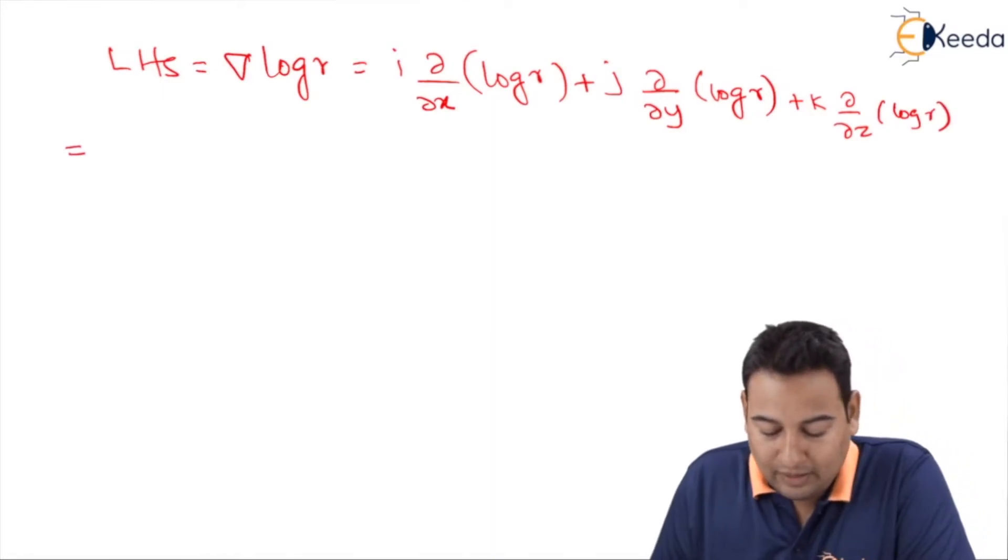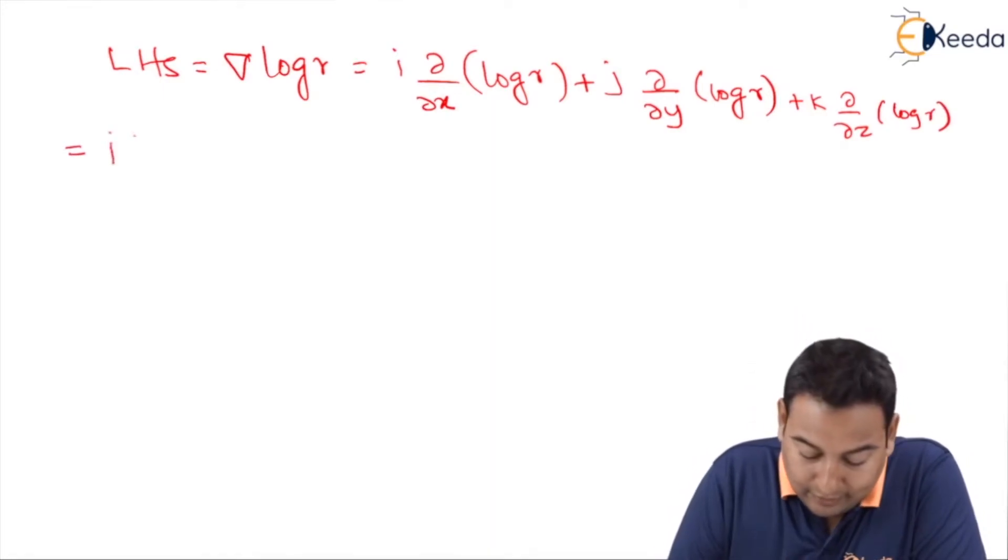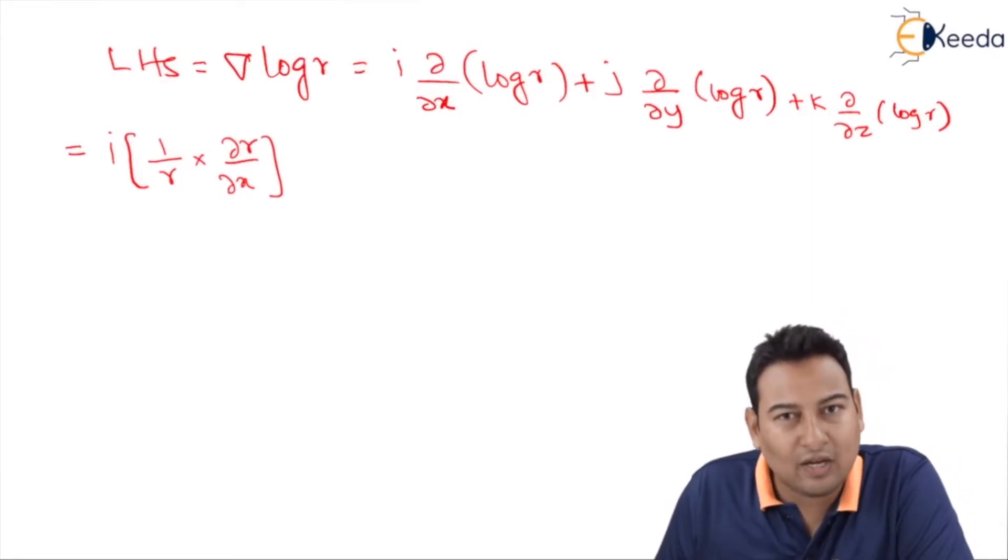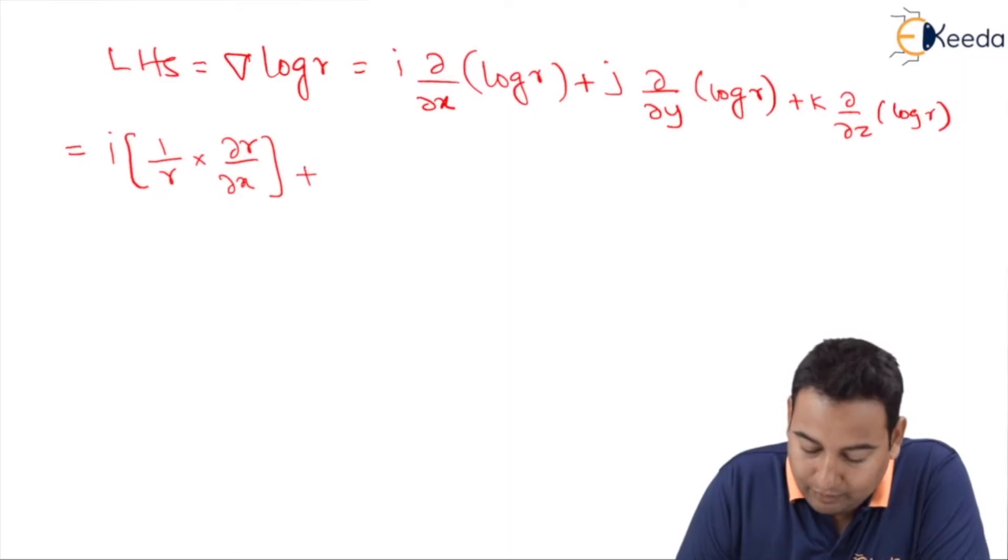Let's differentiate with respect to x. Log r derivative is 1 upon r into dou r by dou x. As we know, log x - derivative of log x is 1 upon x, so log r is 1 upon r, plus j.